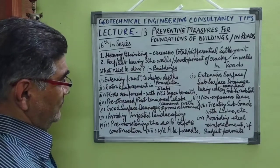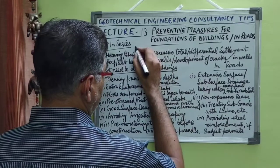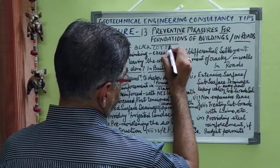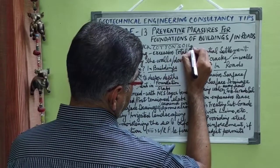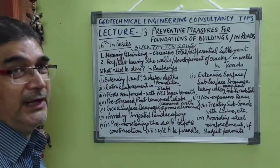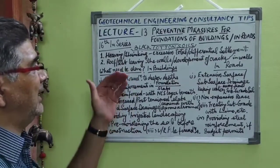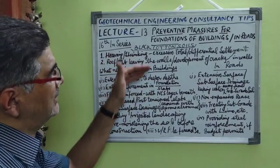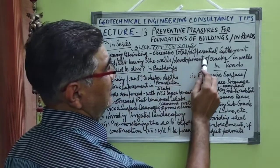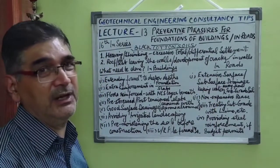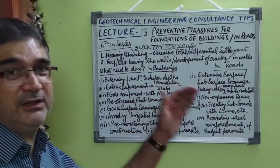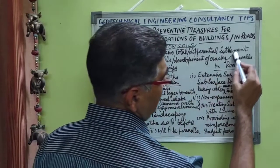Black cotton soil — this lecture covers preventive measures for foundations in black cotton soils. What actually happens is heaving due to alternate shrinkage and swelling characteristics of these soils, which in turn may cause excessive total settlement or differential settlement beneath the foundations of any lightly loaded structure or any kind of structure, which may cause roof and slabs to leave the walls, and you may see the development of diagonal cracks in the walls.